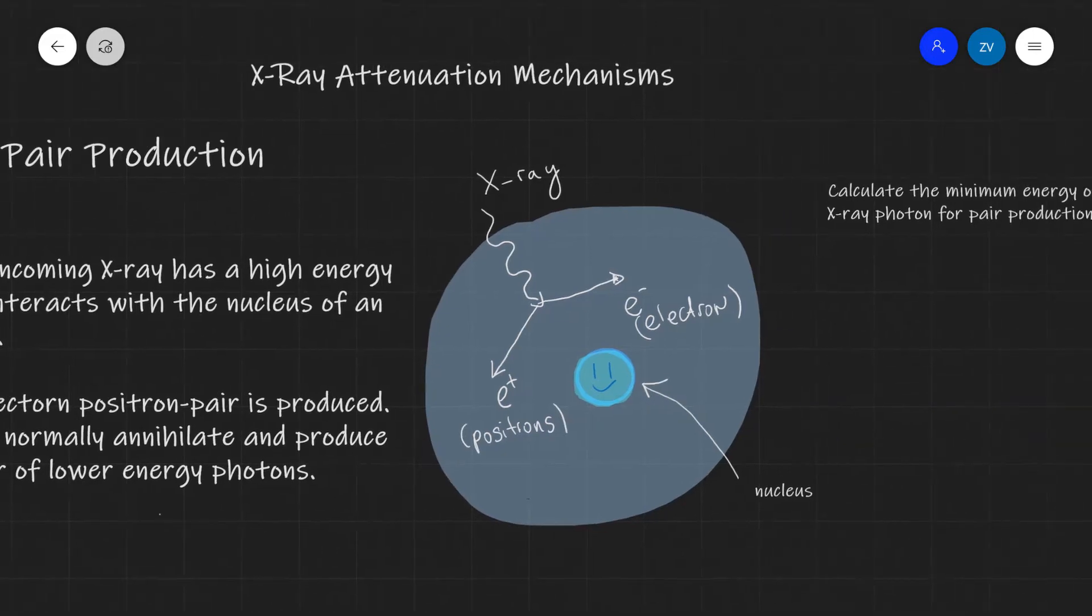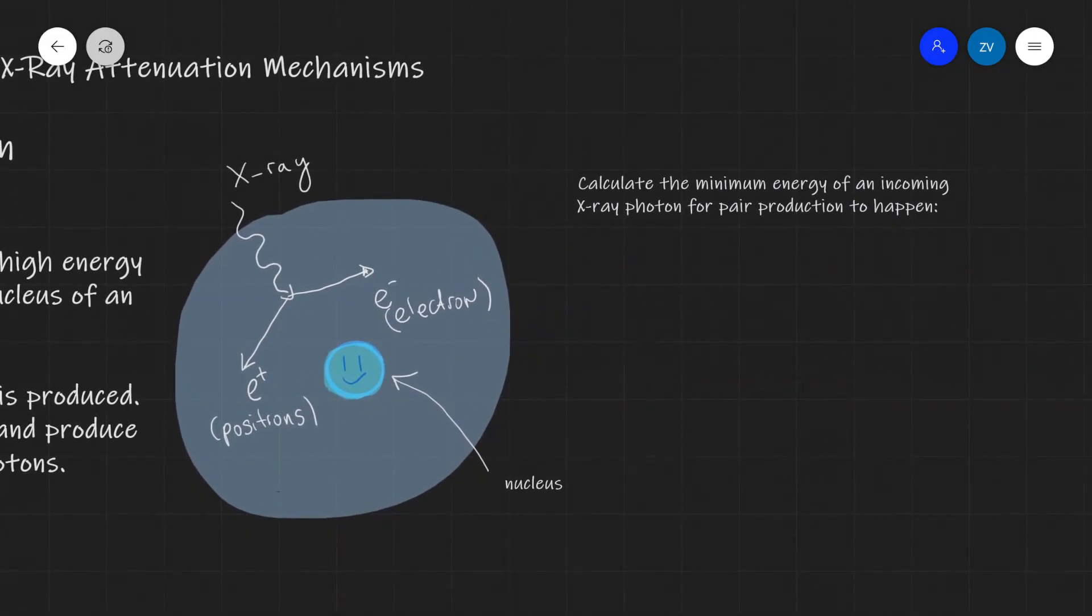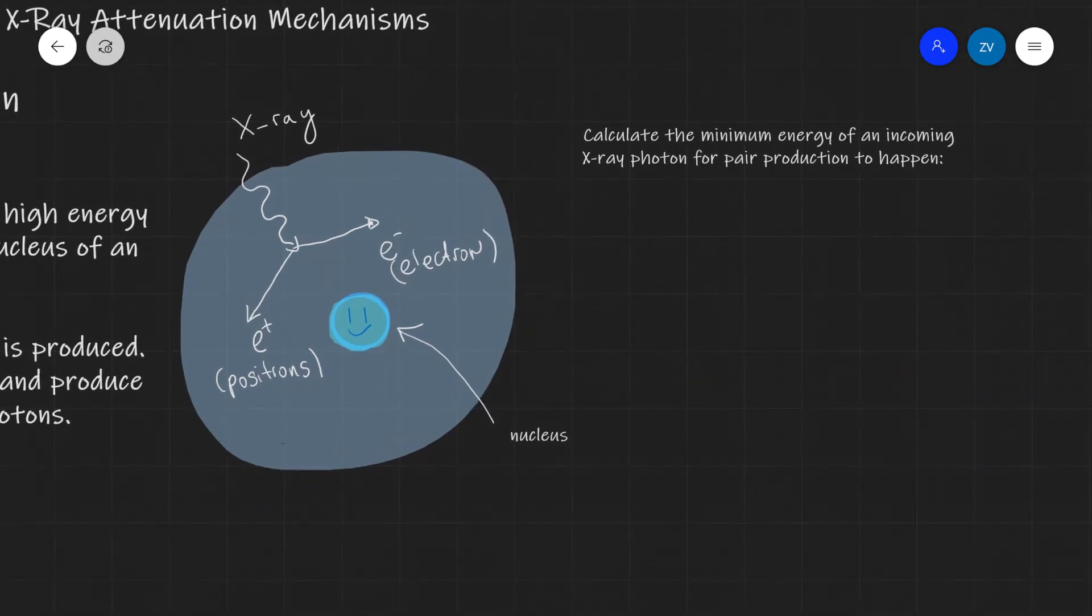Now we could actually calculate the minimum energy of an incoming X-ray photon. And if we wanted to, we could also calculate the minimum wavelength or the frequency. Well, let's do this. We know that the energy delta E, that's the energy of the photons, will have to be equal to delta m c squared.